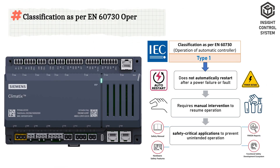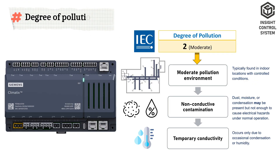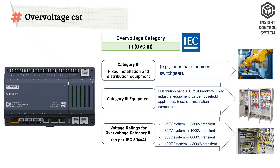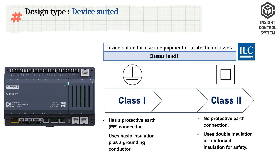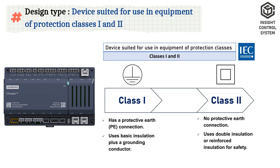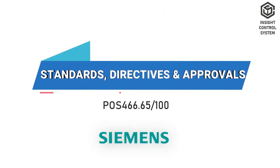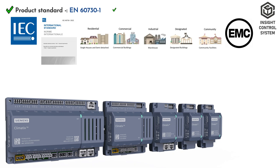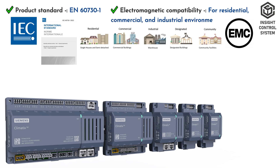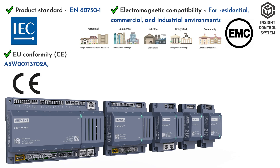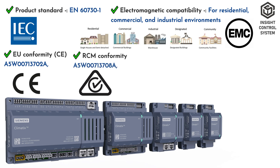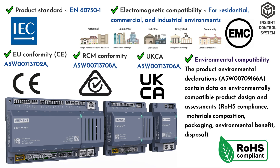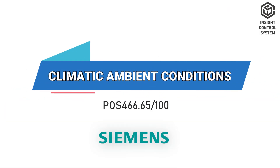Protection classification as per EN 60730: operation of automatic controller is Type 1, degree of pollution is 2, overvoltage category is 3, design type is suited for use in equipment of protection classes 1 and 2. Standards, directives and approvals: product standard EN 60731, electromagnetic compatibility for residential, commercial, and industrial environments, CE conformity, RCM regulatory compliance mark, and UK Conformity Assessed (UKCA).